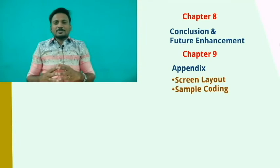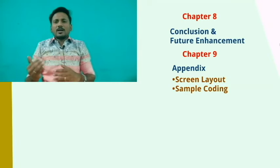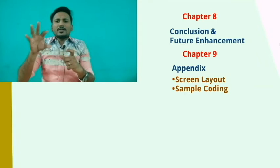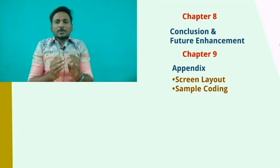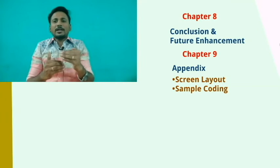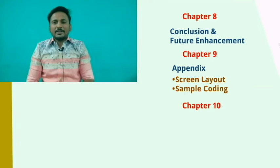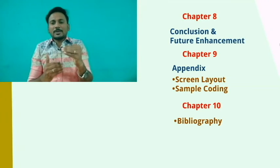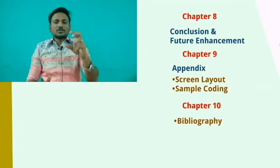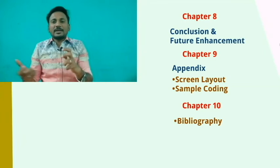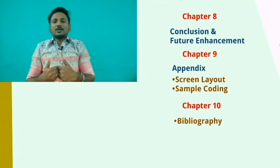The ninth chapter is Appendix, which is not mandatory but required in some colleges. After all your project chapters, you place your source code in the appendix. The last chapter is Bibliography. For bibliography, you should not place a page number. It has two concepts: Books — where you list the author, publication, book title, and year of edition — and Websites, where you list the URLs you referenced.